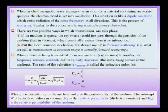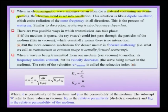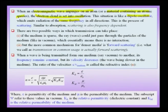When an electromagnetic wave impinges on an atom or a material containing atomic species — which could be an ion or a metallically bonded material — the electron cloud is set into oscillation. This situation is like a dipole oscillator, and therefore this dipole oscillator radiates emission all around it at the same frequency. This process is essentially what we call scattering.